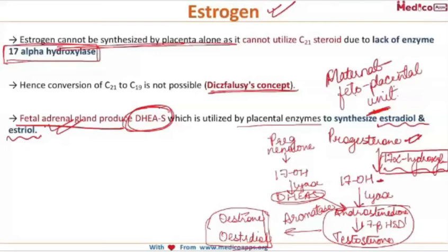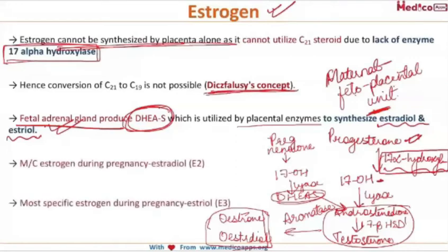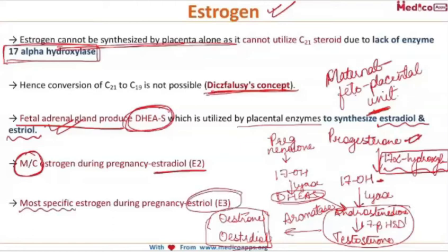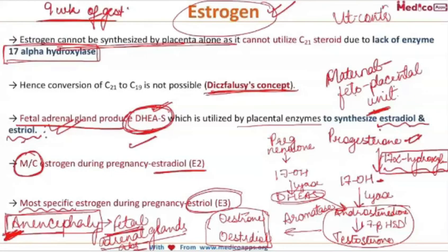Two important questions: what is the most common estrogen during pregnancy? If the question says 'most common,' your answer is estradiol — it is the most common estrogen during pregnancy. But if you are asked the most specific estrogen during pregnancy, then your answer will be estriol.